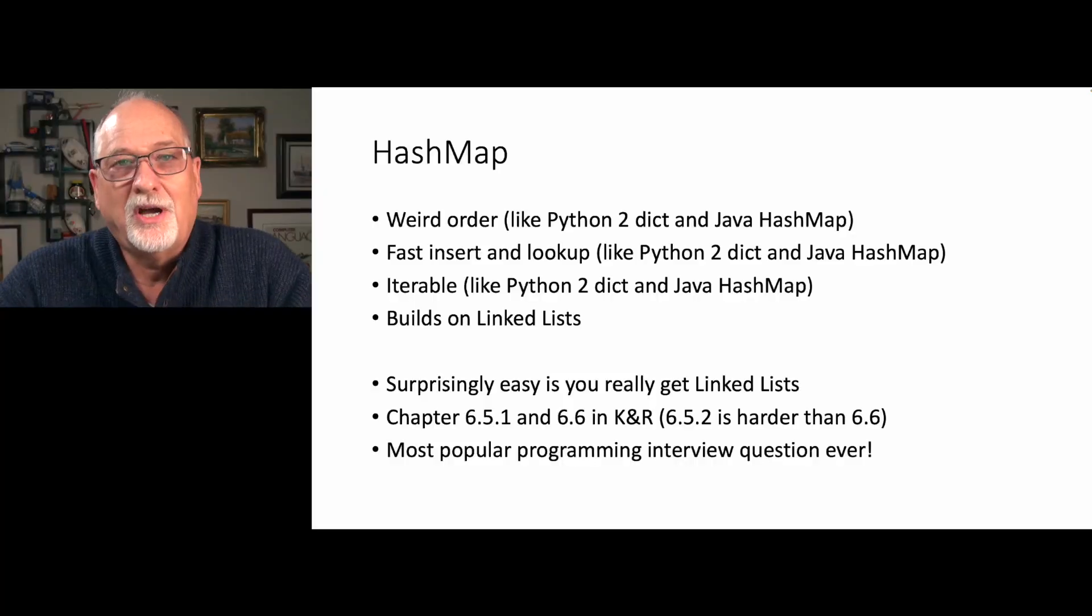So here we go. Let's talk a little bit about our hash map implementation. It's got a weird order, and once you see the data structure internally it'll be clear why there's a weird order. It is like a Python 2 dictionary and it's like a Java hash map.